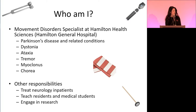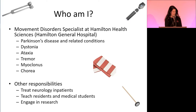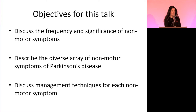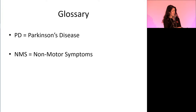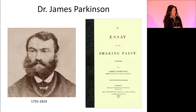I also see other conditions like dystonia — twisting body movements — ataxia, which is incoordination, different types of tremor, myoclonus with jerking movements, and chorea which is more wiggling movements. I see inpatients, teach residents and medical students, and engage in research. I'm going to discuss the frequency and significance of non-motor symptoms, a diverse array of those symptoms, and management techniques for each. I'll be using 'PD' for Parkinson's disease and 'NMS' for non-motor symptoms throughout.